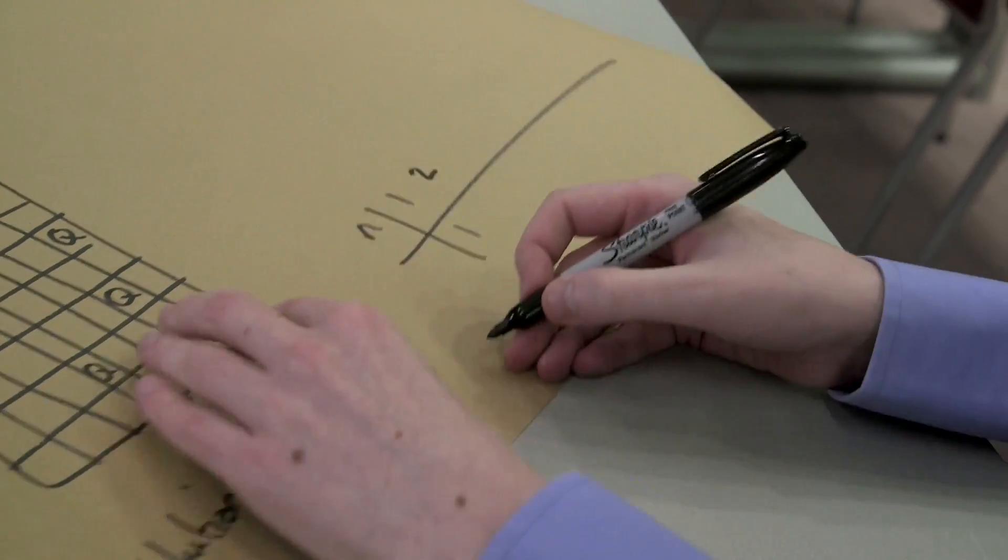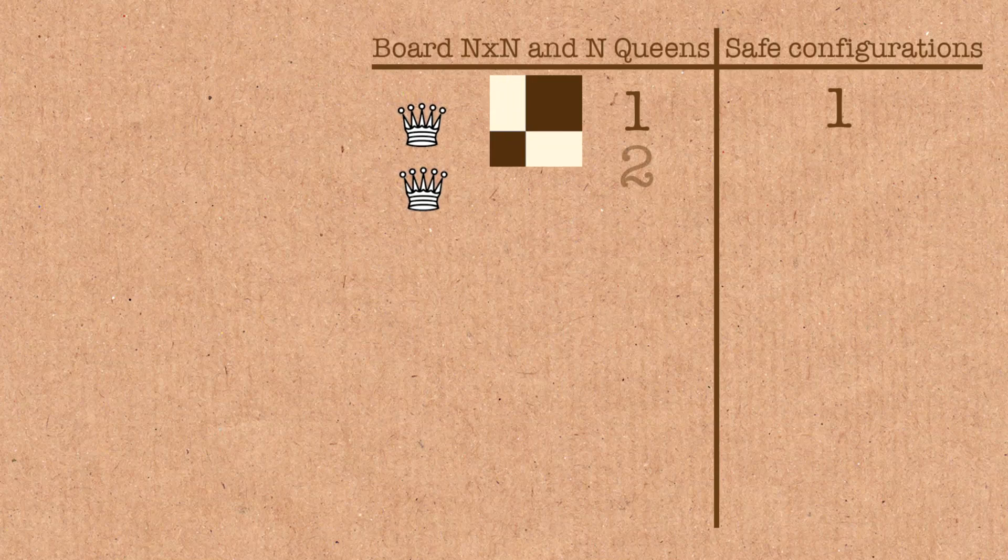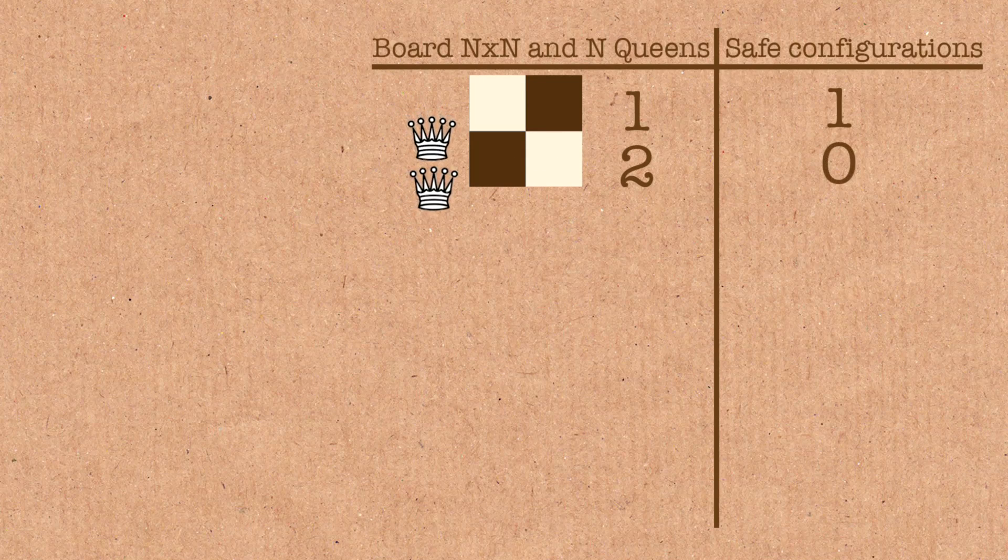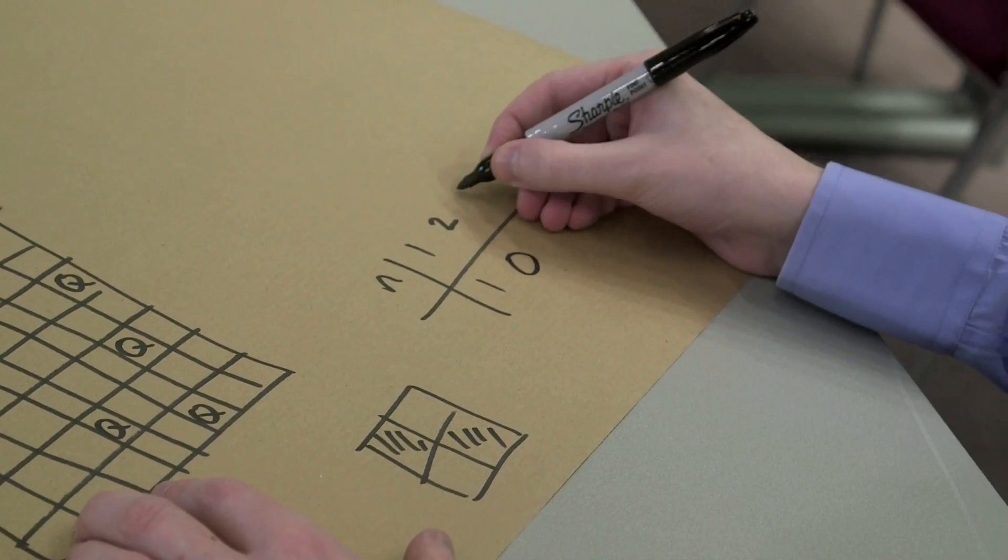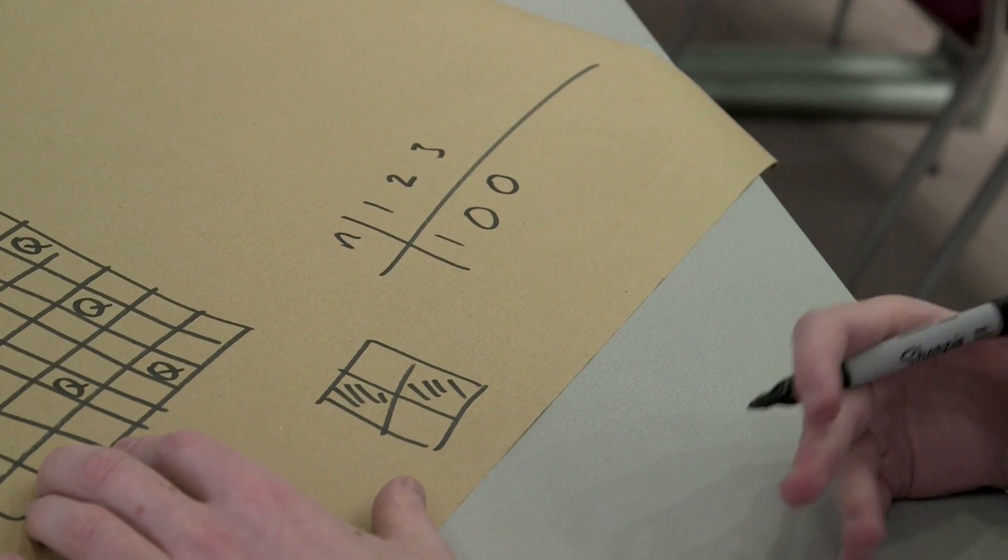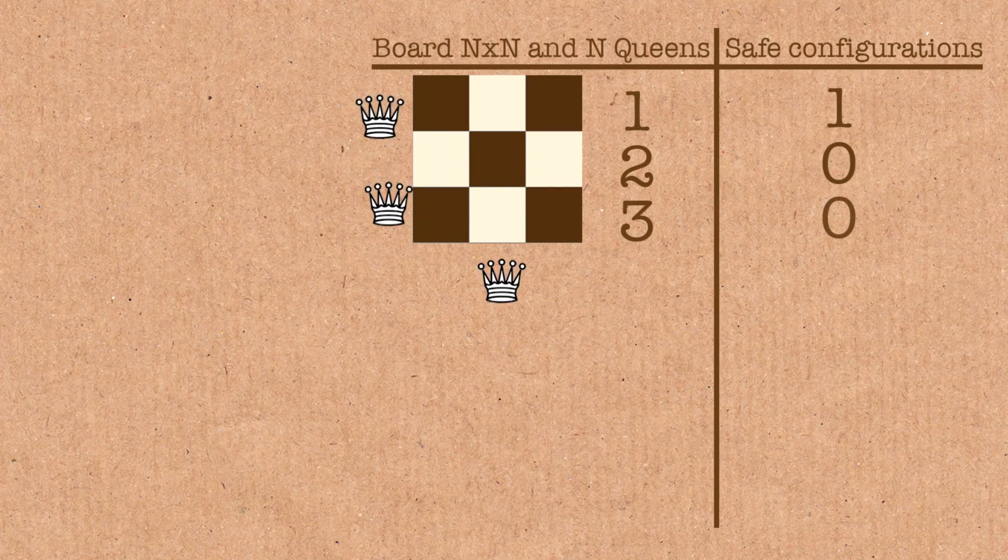For a 2x2 board, looks like this, can you place two queens on it so they're not attacking each other? You can't. No, that's impossible. Zero ways to do that. Same problem with 3. I think that's impossible as well. Three queens on a 3x3 board and it's impossible for them not to be attacking each other.